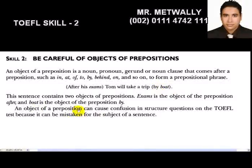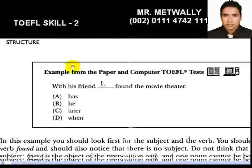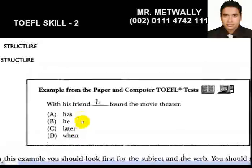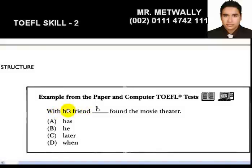An object of a preposition can cause confusion in structural questions on the TOEFL test because it can be mistaken for the subject of a sentence. For example, you may mistake 'after his exam' as the subject, which it cannot be. Consider this example: 'With his friends, blank found the movie theater.' The sentence starts with a preposition, so be careful — this is an object of the preposition and cannot work as the subject.